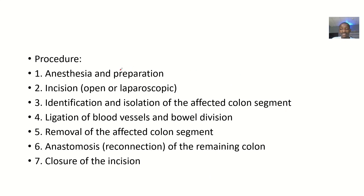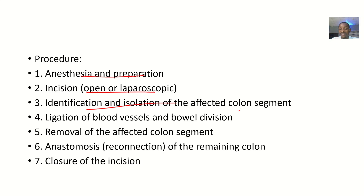For the procedure, you give anesthesia because you are opening up the patient so you don't want them to feel pain. You prepare them, then you do an incision — that's if you are doing an open hemicolectomy — or a laparoscopic type, where you make small holes to put the laparoscope. Then there is identification and isolation of the affected colon segment, ligation of blood vessels and bowel division, removal of the affected colon segment, anastomosis where you reconnect the good parts of the colon, and closure of the incision.